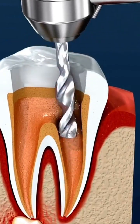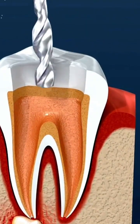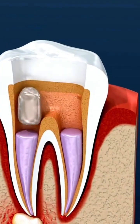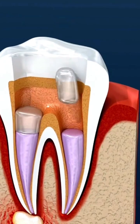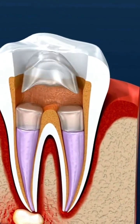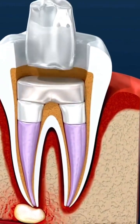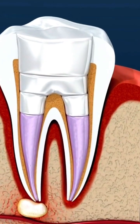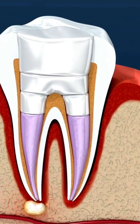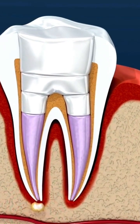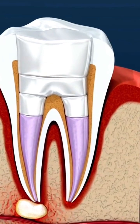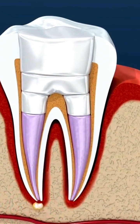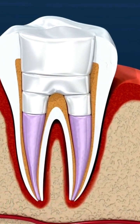To reach the pulp, a small hole is made in the top crown of the tooth. Tiny files are used to remove the infected tissue and clean the inside of the canals. The canals are also shaped to get ready for the filling. Once cleaned and shaped, the roots are completely sealed, and a temporary filling is placed to protect the tooth.